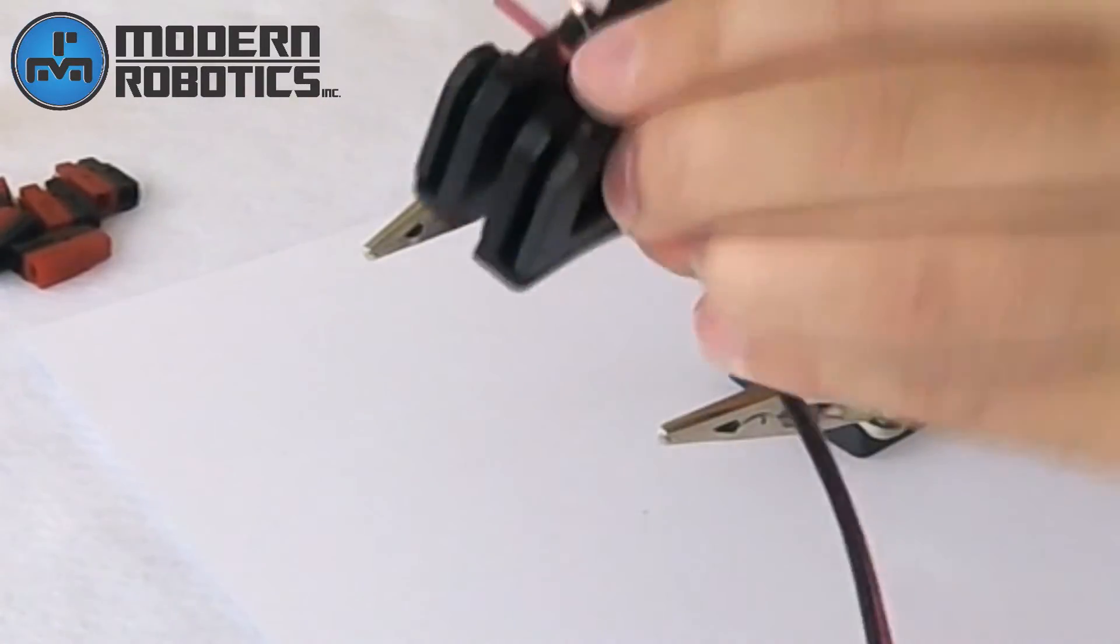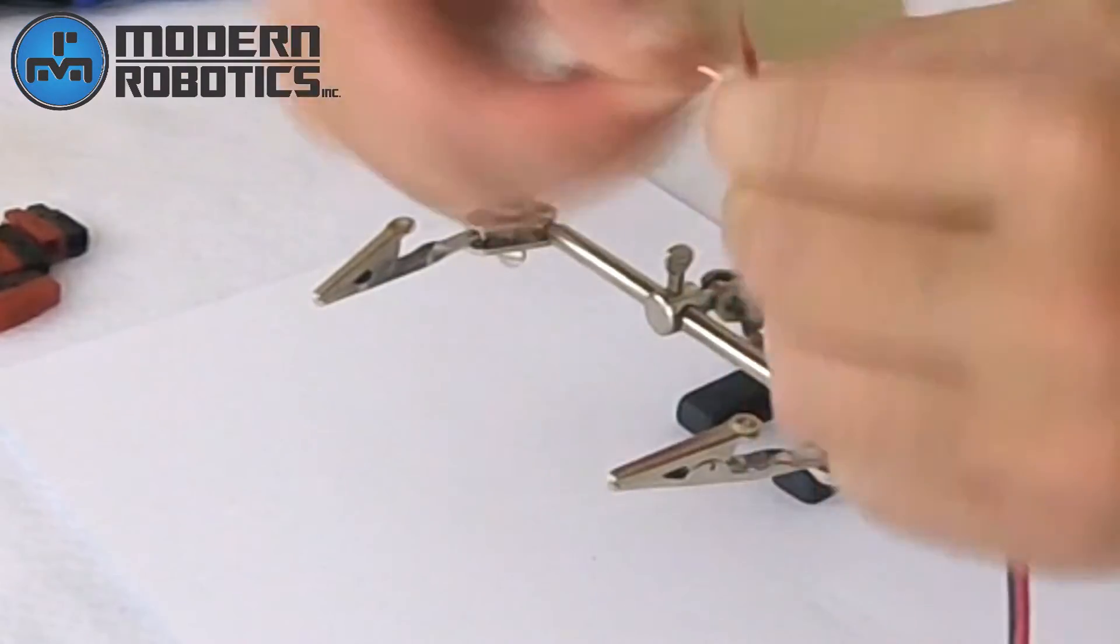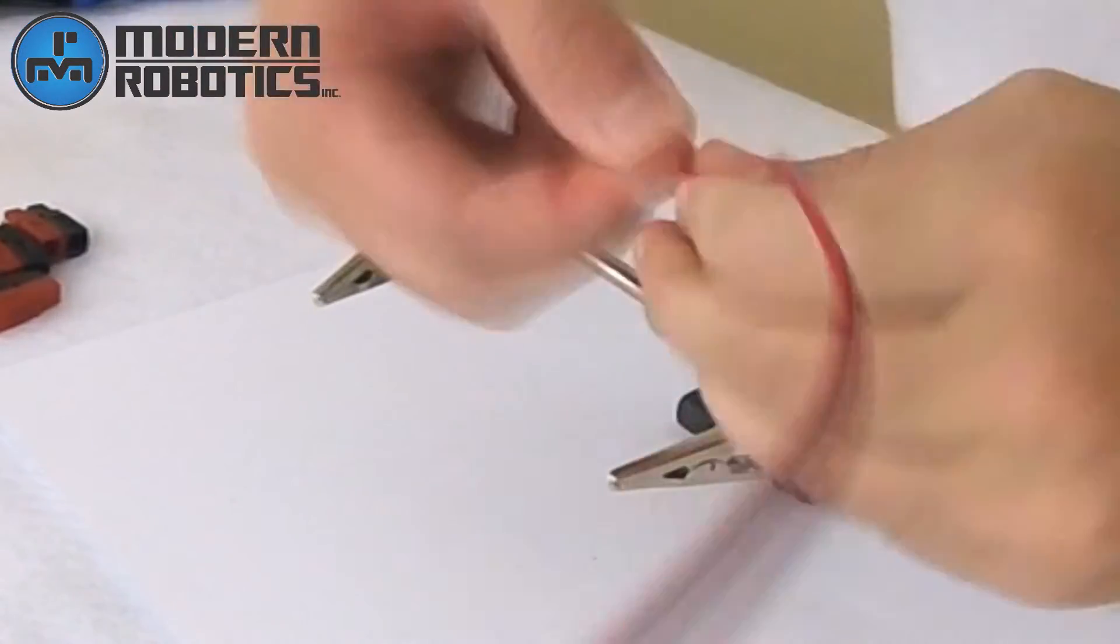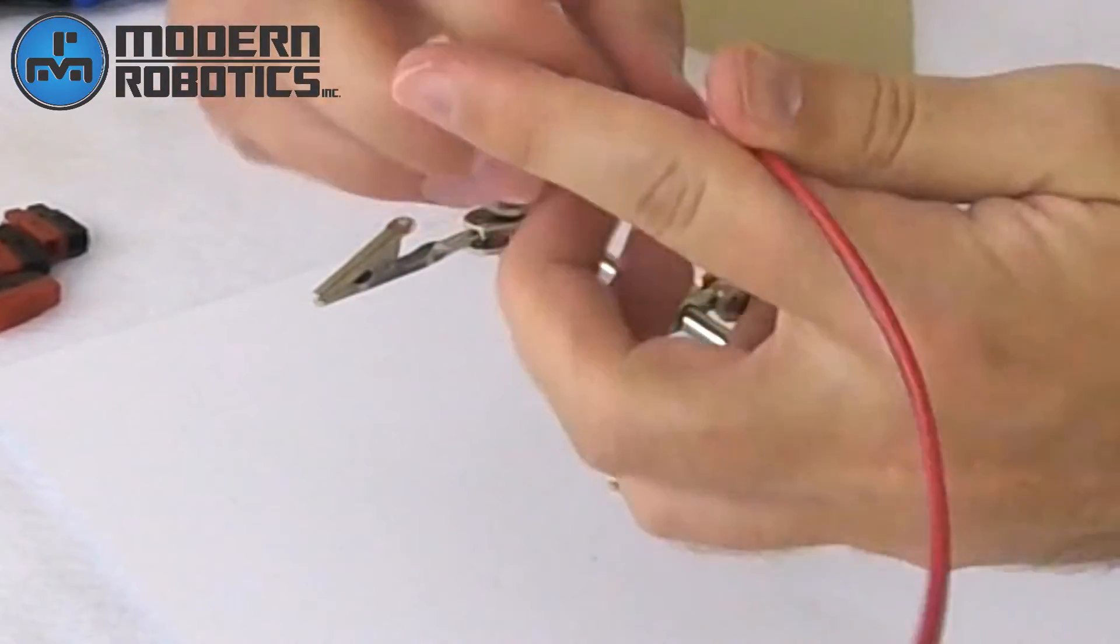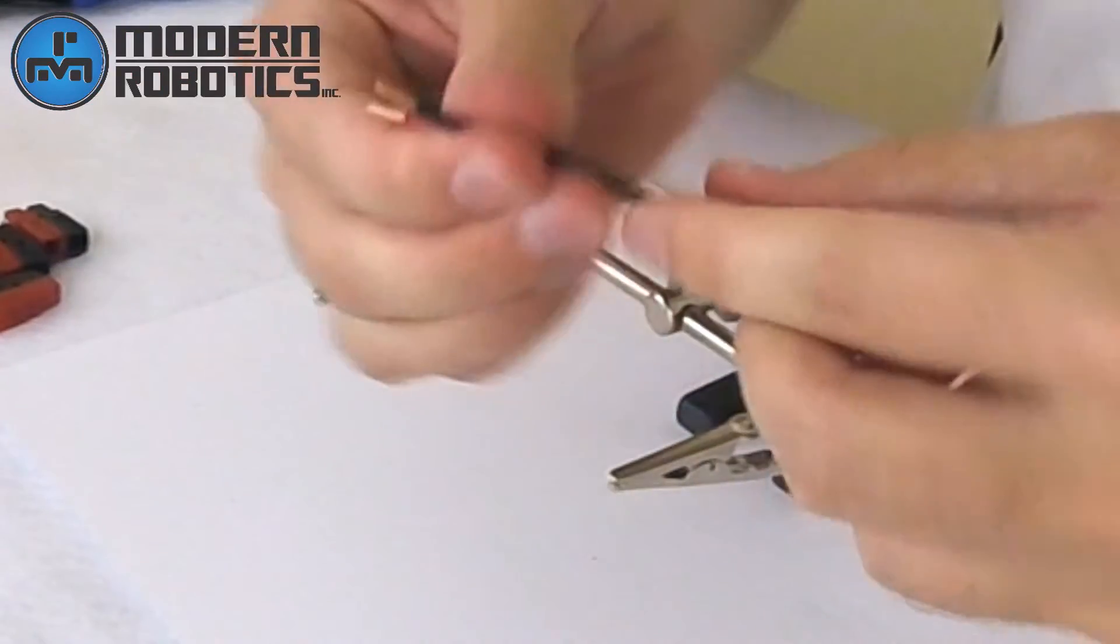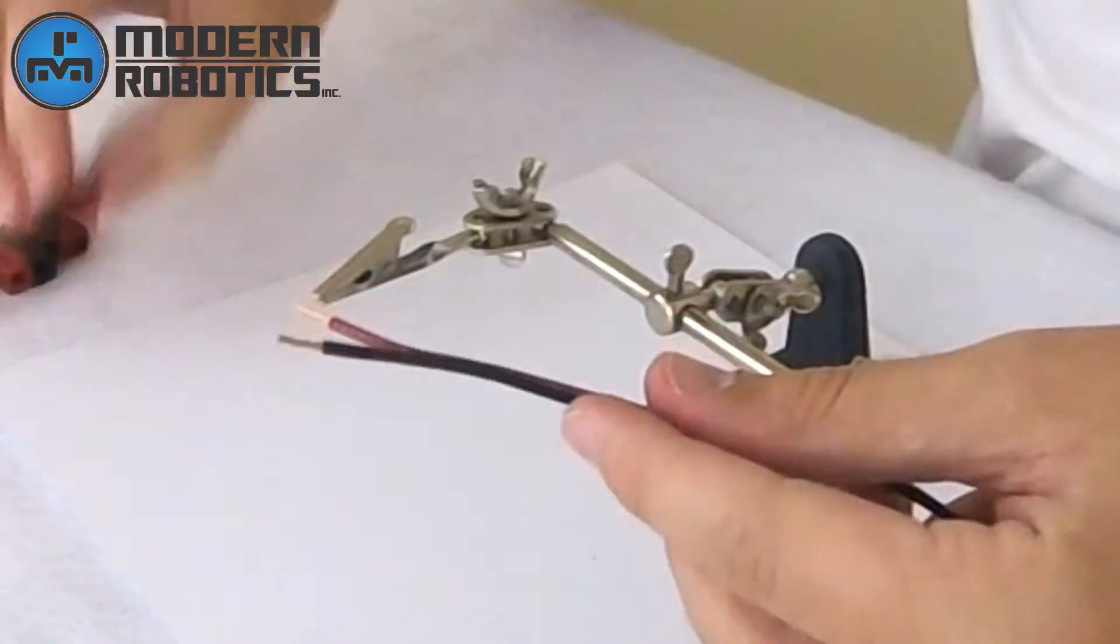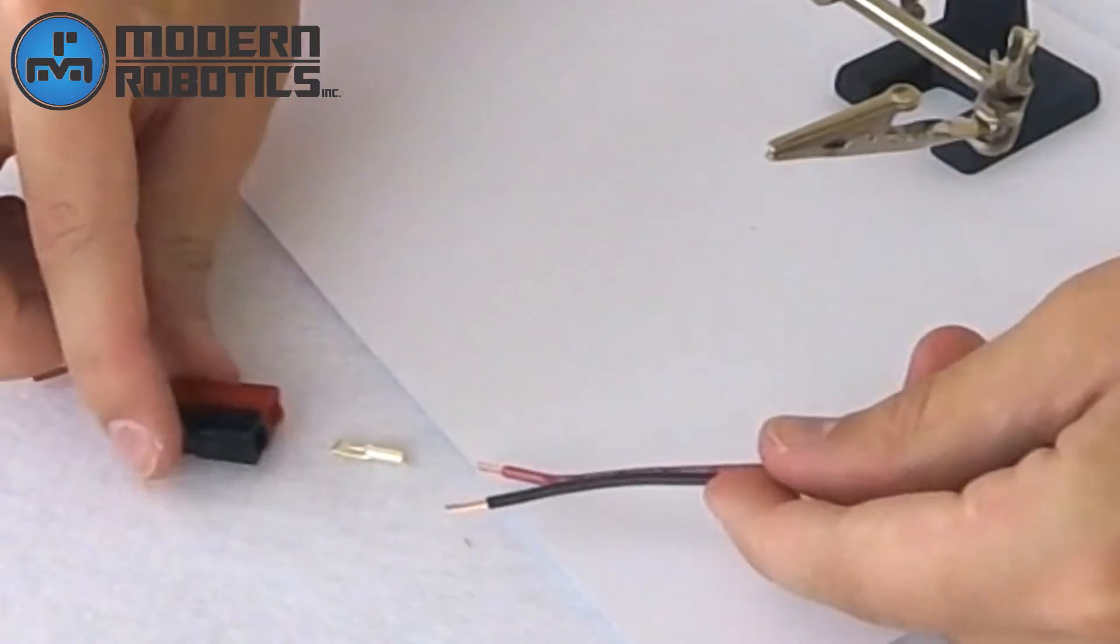Let me make sure that they are both stripped the same amount. That looks pretty good, a little bit longer than the barrel of the contact. I'm going to twist those together so they're easier to insert into that contact. And I'm going to set the wire in my third hand with the red wire coming out on the right, and that's because the red contact always goes on the right.